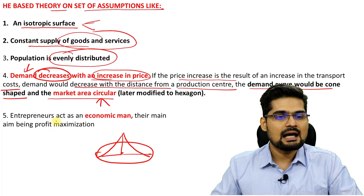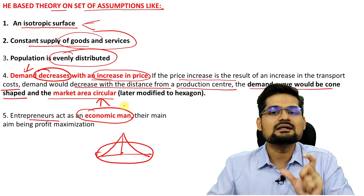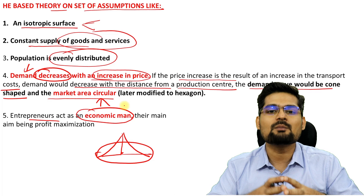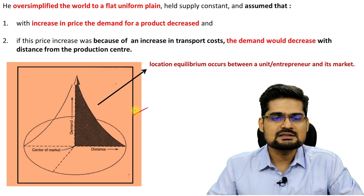Entrepreneurs act as economic men — the very common thread running from Von Thünen to Weber to Christaller's central place theory. All people are assumed to be economic men whose only motive is to create as much profit as possible. Now let's understand what this demand curve and locational equilibrium are all about.